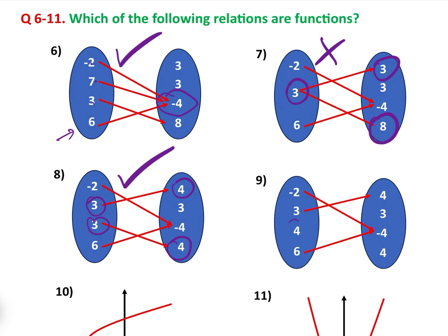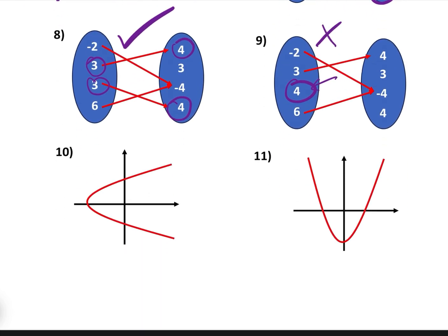Question nine: the element four is not mapped to anything. Therefore that can't be a function because, reiterating the definition, every element of the input has to map to exactly one element of the output, and this element here is not mapping to anything.